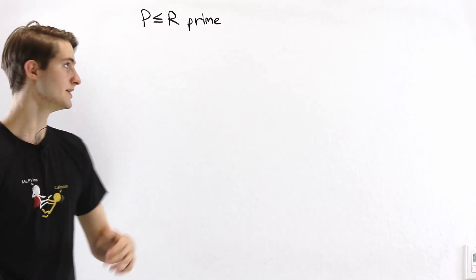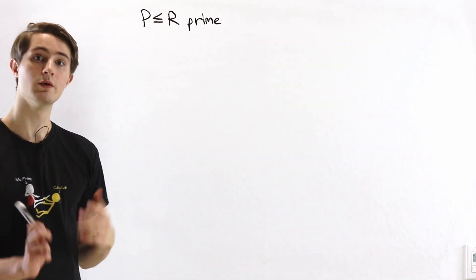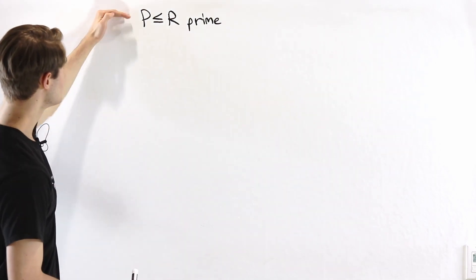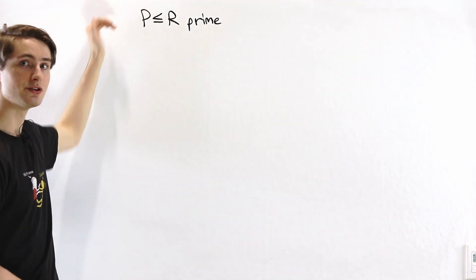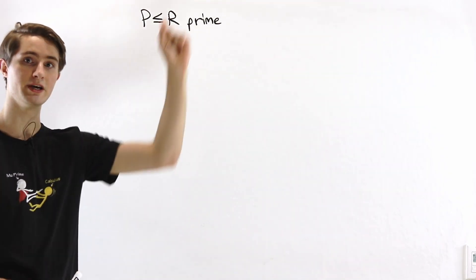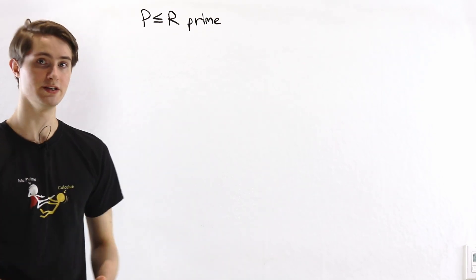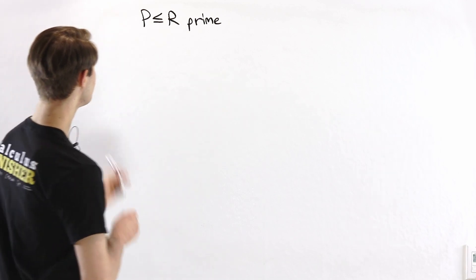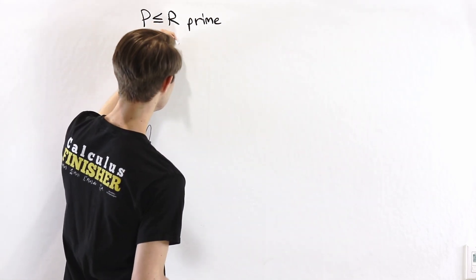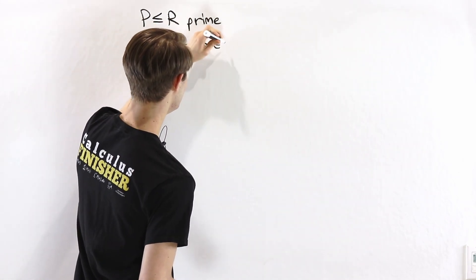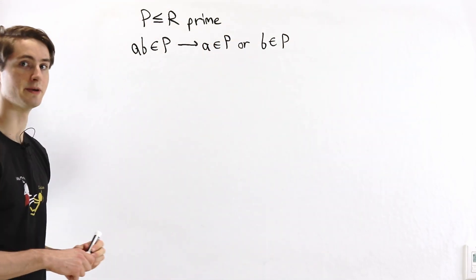Let's start with the case of a prime ideal. Suppose we have some ideal p which is a prime ideal of R. We'll construct a series of equivalent statements that will lead us to our final result. First, what's the definition of a prime ideal? It means that if some product ab is in p, this implies that either a is in p or b is in p. This is the definition of a prime ideal.